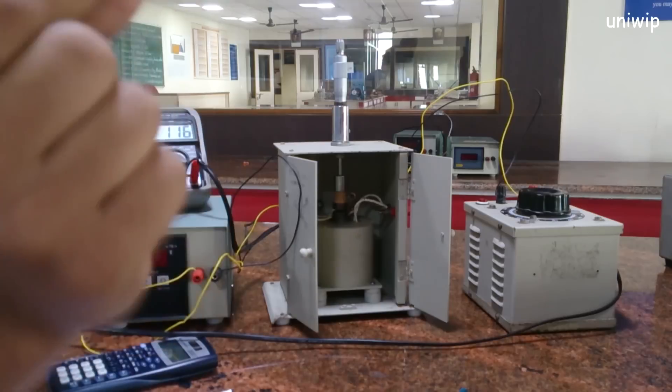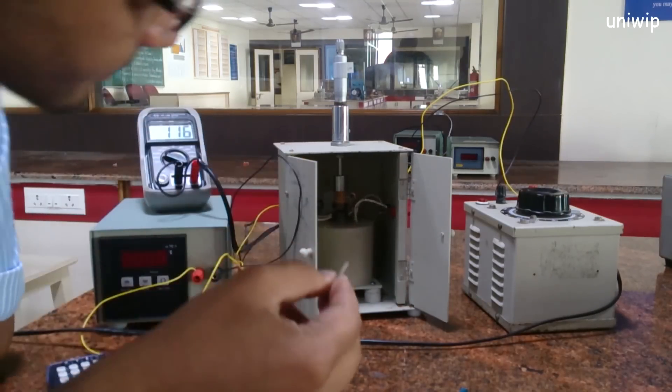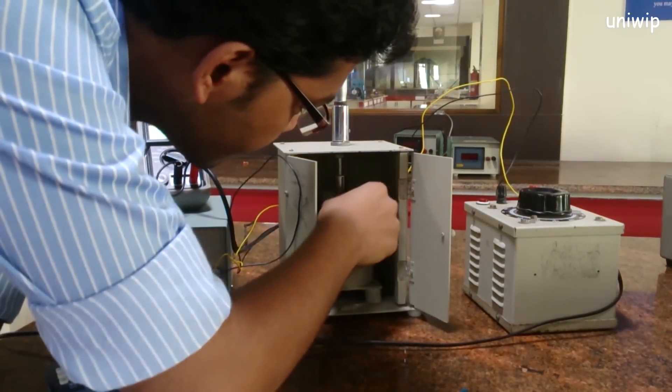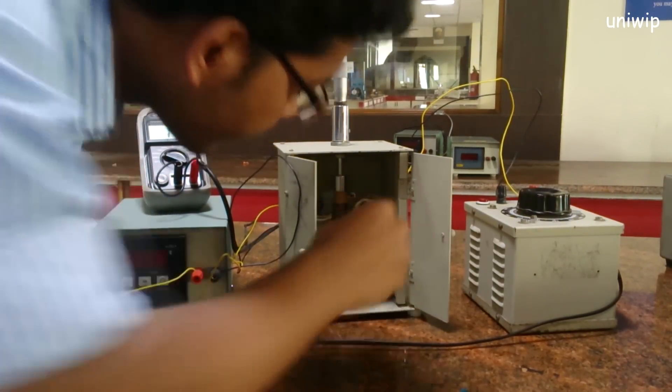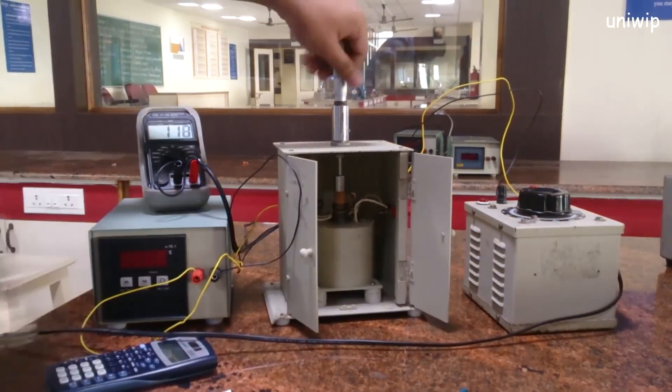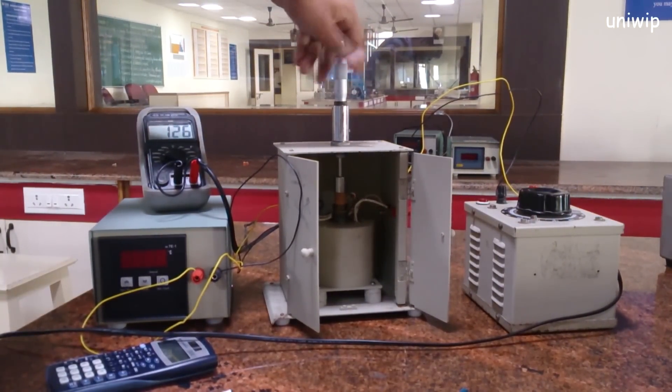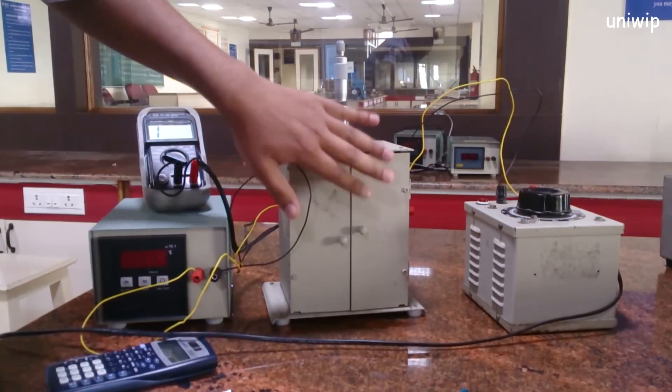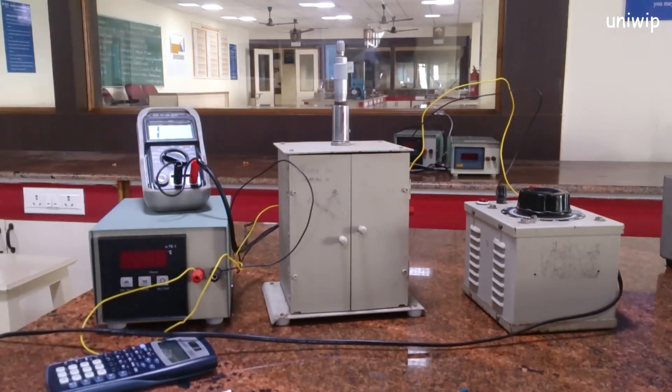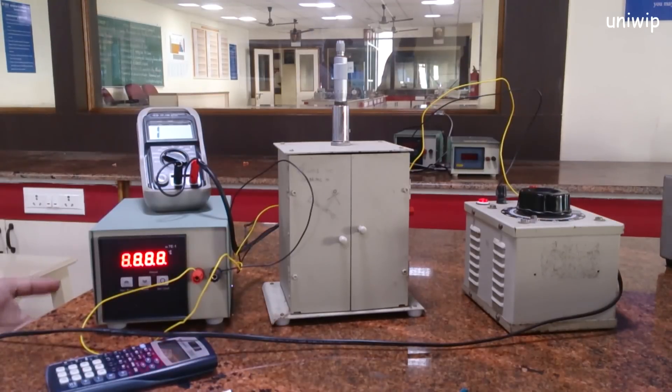First, what I'm going to do is put this dot inside here. There you go. The dot is placed nicely. Now, we're going to tighten this thing. Close the box. We need to close the box because we don't want the heat to go out. Now, let's start with switching on all the apparatus.